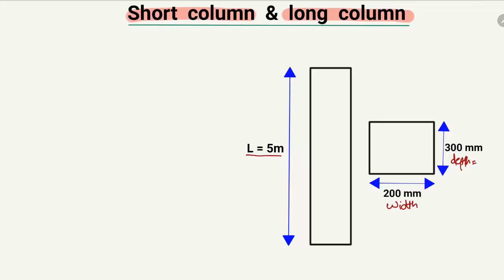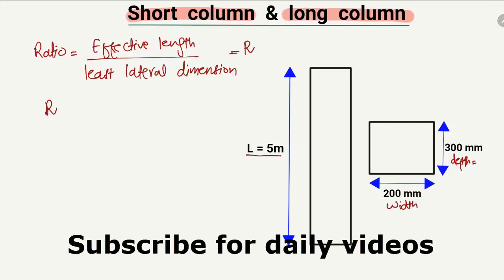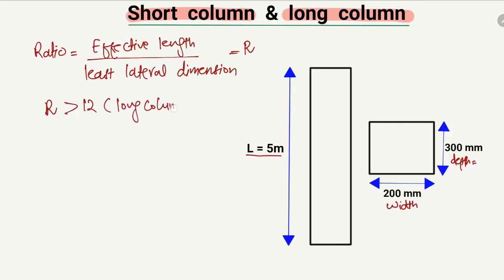So how do we differentiate between a short column and a long column? There is a ratio defined as the effective length of the column divided by the least lateral dimension. This ratio is represented by r. When r is greater than 12, we call that column a long column. When r is less than 12, we call it a short column.